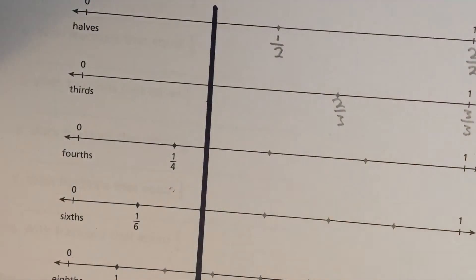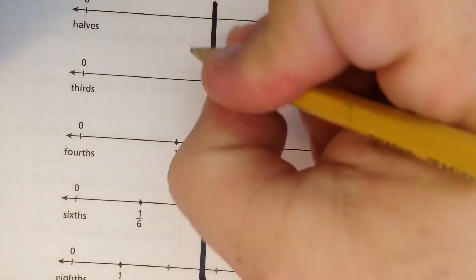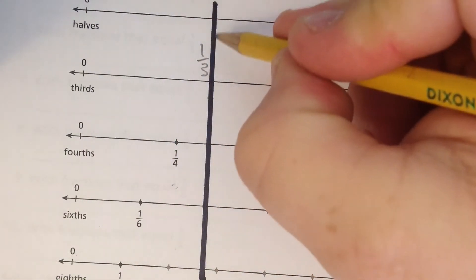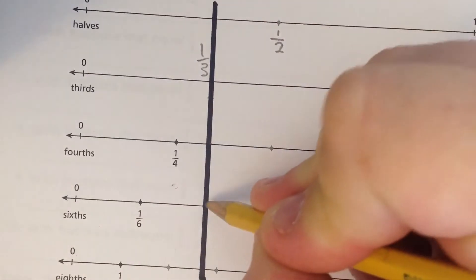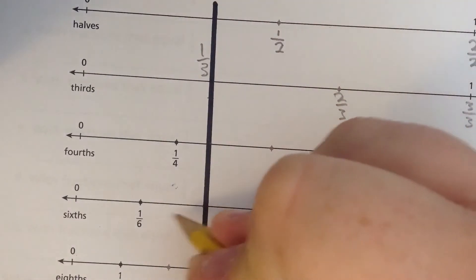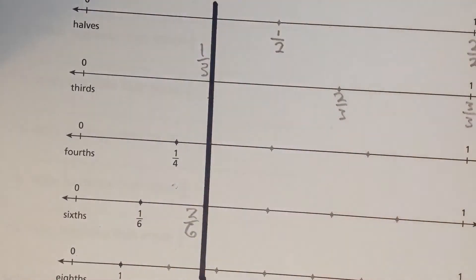For example, I wrote on top of it, but this is one-third. That one doesn't line up, but this one does. That's one-sixths, two-sixths. Those two line up.